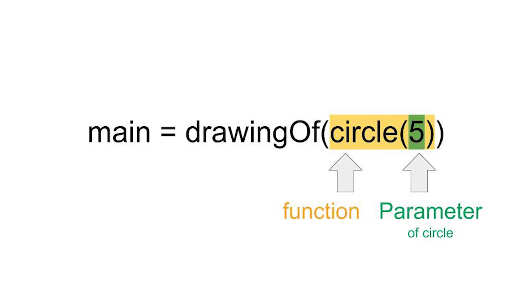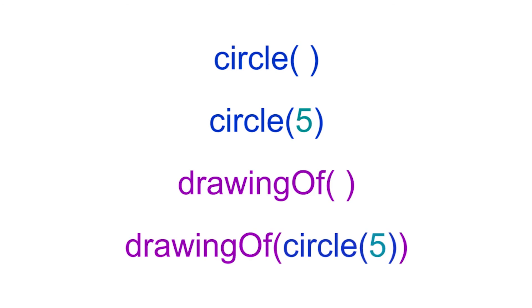In case that was confusing, let's break it down a little more. So circle is a function. It has an open and closed parenthesis that the parameter goes into. The parameter is 5 because we're going to give it a radius of 5. So circle is the function, 5 is the parameter. Then we can take that entire phrase, circle 5, and make it a parameter of drawing of. So drawing of is also a function. And it has an open and closed parenthesis that the parameter goes in. And we're going to take that whole phrase, circle 5, and drop it in as the parameter. So now circle 5 becomes the parameter for drawing of. Circle serves as both a function and a parameter.